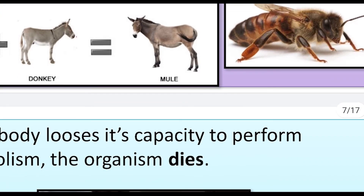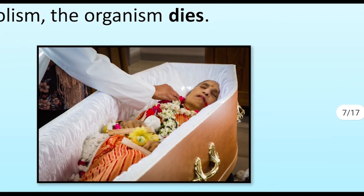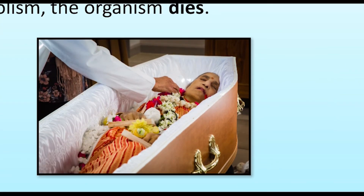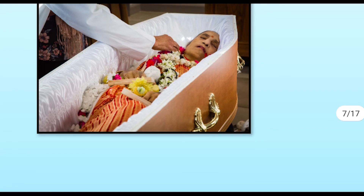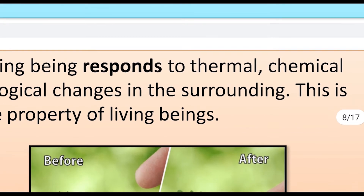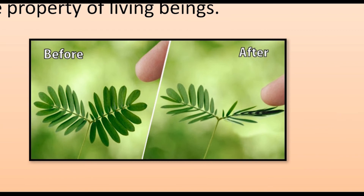As the body loses its capacity to perform metabolism, the organism dies. Once metabolic activity stops, the energy required for each and every cell stops, and the organism dies. Any living being responds to thermal, chemical, or biological changes in its surroundings, as shown in the diagram. This property is called responsiveness or irritability, and it is a unique property of living organisms.